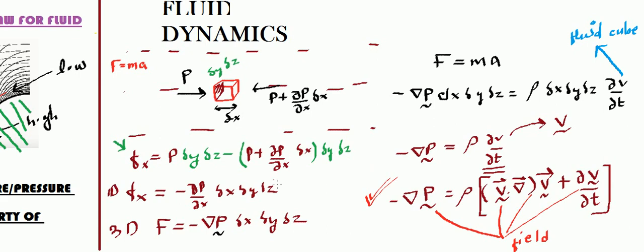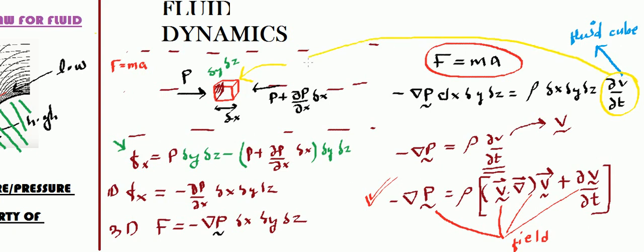Remember that F = ma was applied for a single fluid cube, and as a result the rate of change of velocity was held by that cube. By using the v-dot-del operator, we were able to convert from the cube's velocity to v-tilde, which is the distribution of velocities all throughout the fluid — the field v. So this is Euler's equation for fluid, all in terms of field variables. The application of this will be discussed in the next lecture.